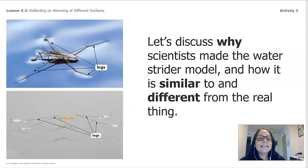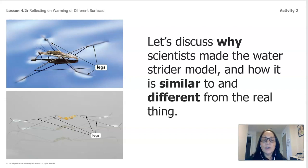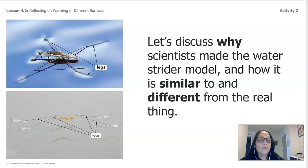Let's discuss why scientists made the water strider model and how it's similar to and different from the real thing. At the top you see the real one and at the bottom you see the model — the model does not have a body, it's really focusing on the legs. I'm going to show you two pictures and ask you a question.